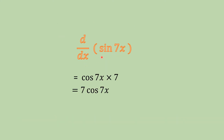For the derivative of sin 7x: previously the derivative of sin x is cos x. But here instead of x, you have 7x, which is a function. So the answer is cos of 7x, multiplied by the derivative of 7x. The derivative of 7x is 7. Therefore the answer is 7 cos 7x.